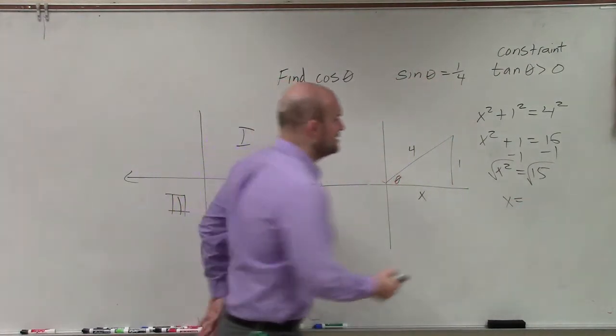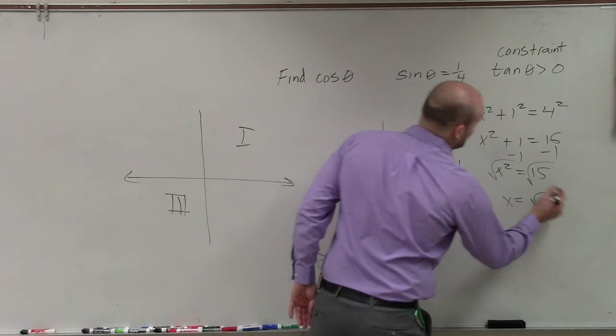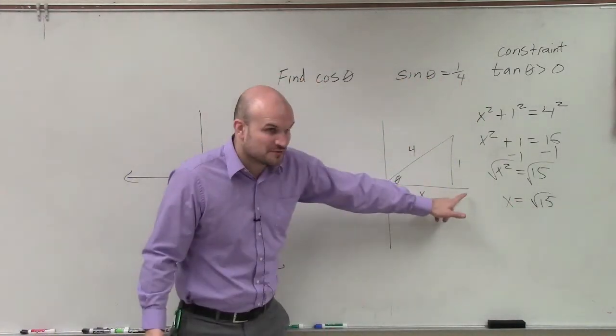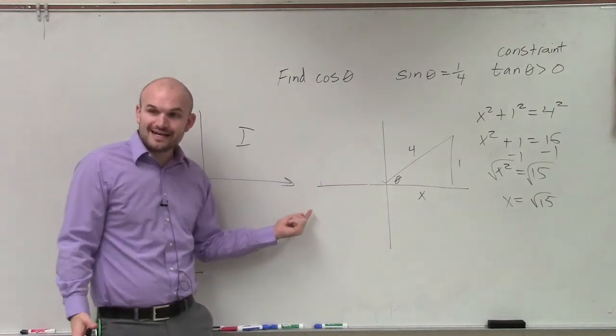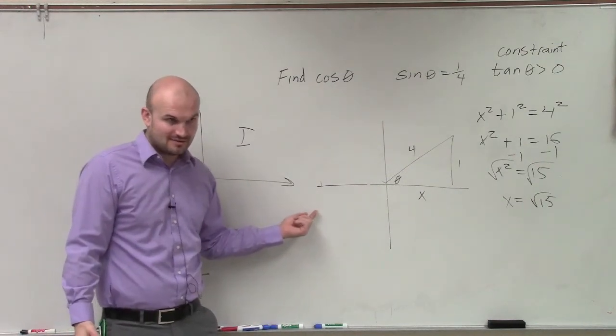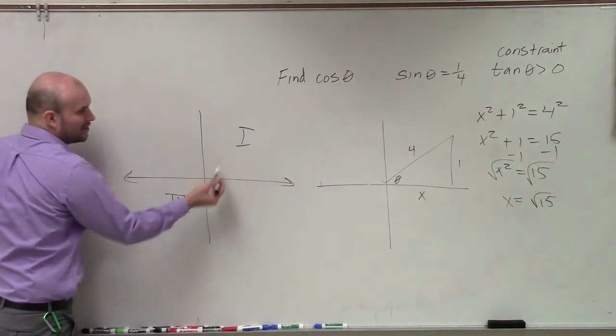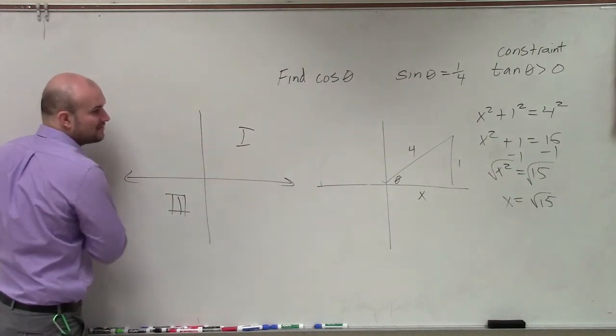x equals, now since that's to the right, it's going to be positive the square root of 15. Right? It's always plus or minus. You guys can see, positive square root of 15. And this would have been negative square root of 15. You see how it's plus and minus? However, we're only looking for our constraint. It only tells us it has to be in the first quadrant.